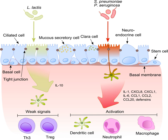The mechanism by which they persist in the lower airways in healthy individuals is unknown. Fungal genera that are commonly found in the lung microbiota include Candida, Malassezia, Neosartoria, Saccharomyces, and Aspergillus, among others.